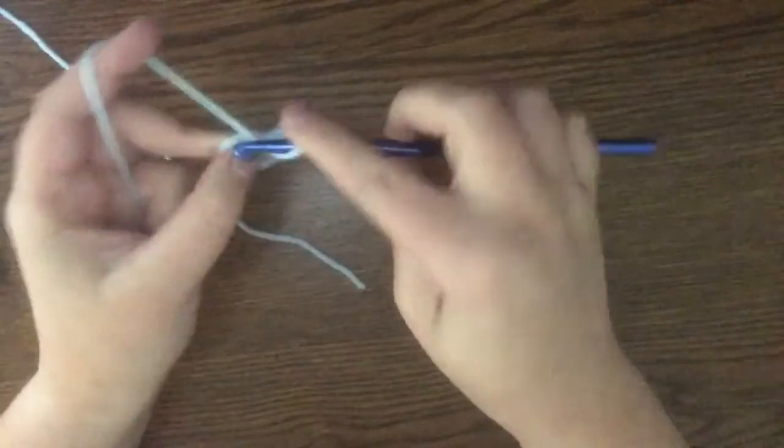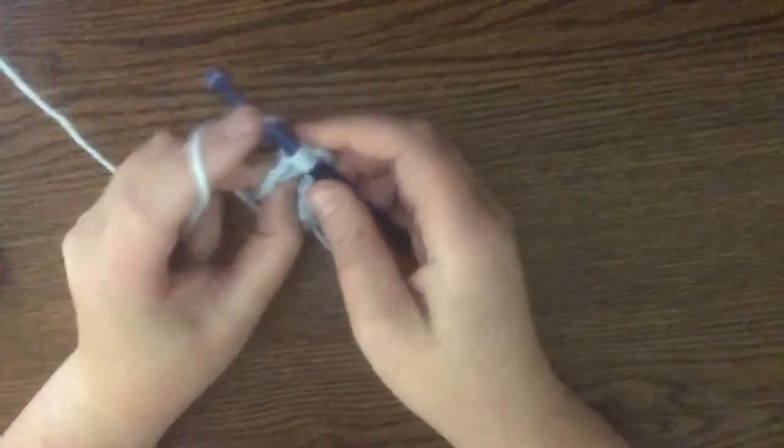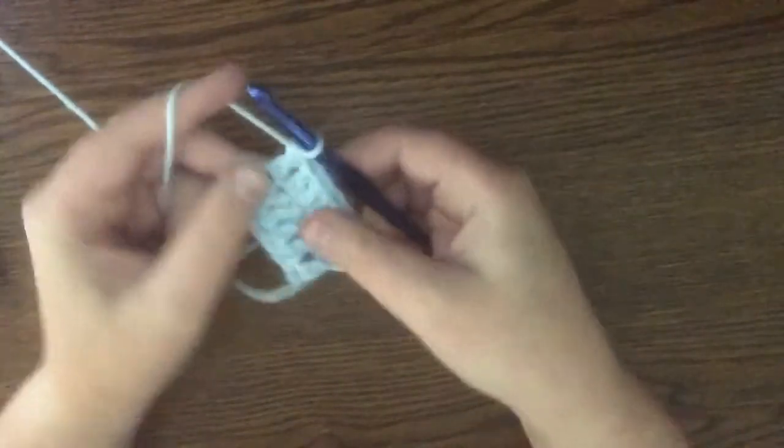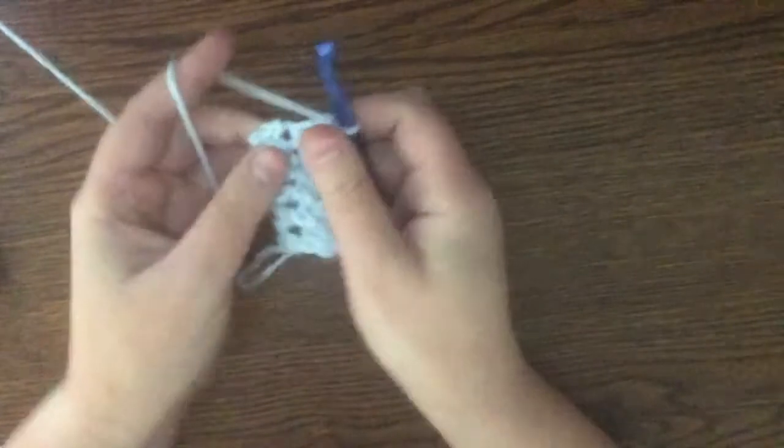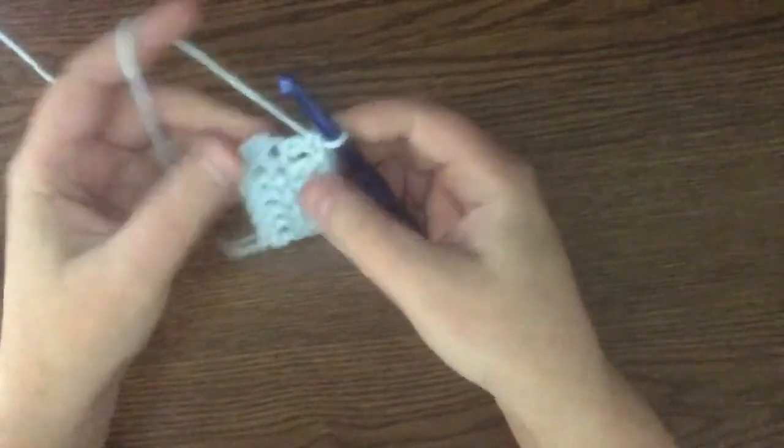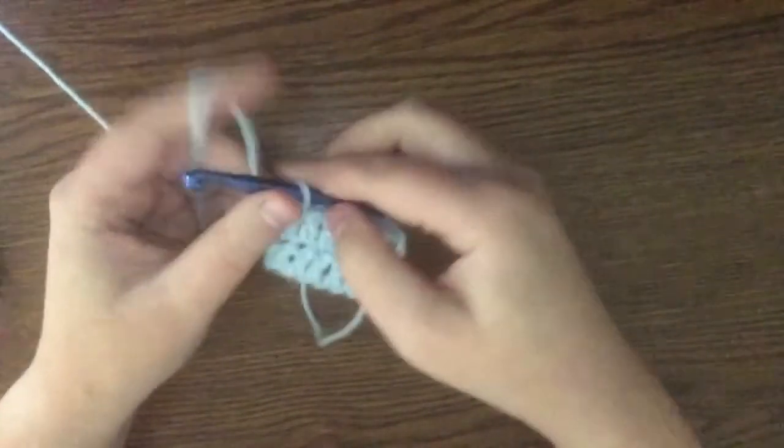Double crochet is another good stitch for something like a scarf or a blanket. It works up pretty quickly because it's larger, but it also takes up a good amount of yarn compared to single crochet.